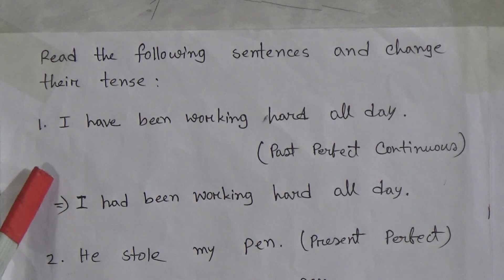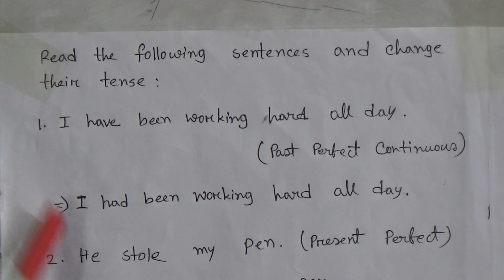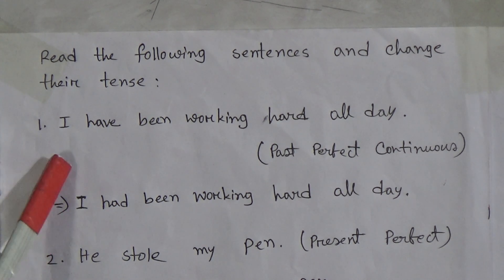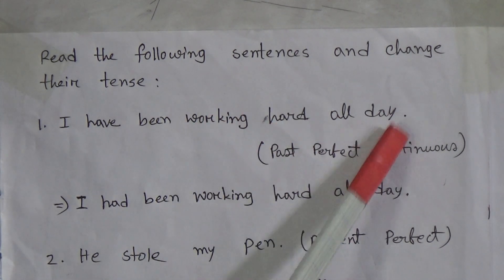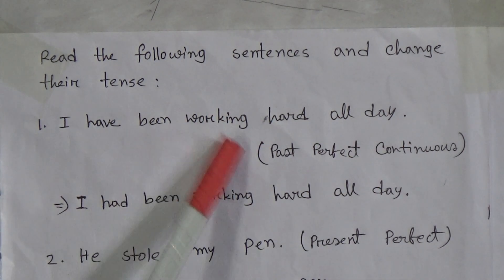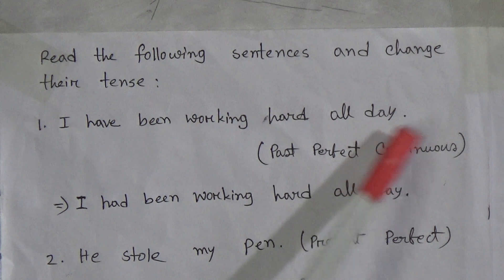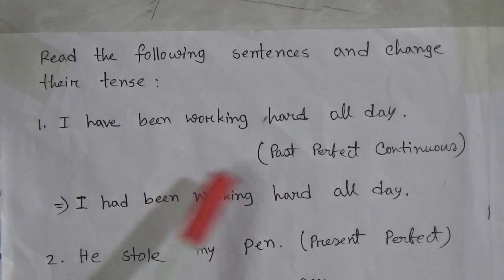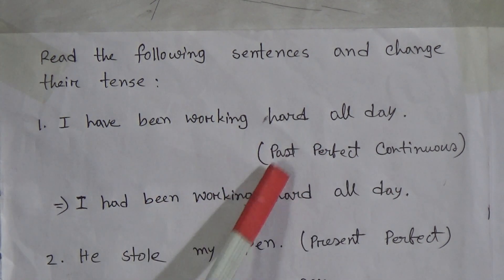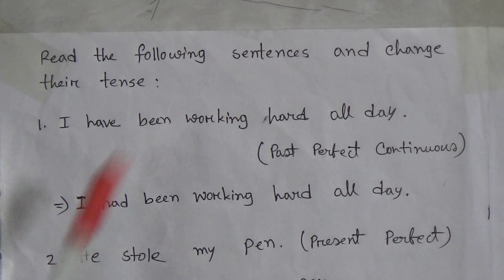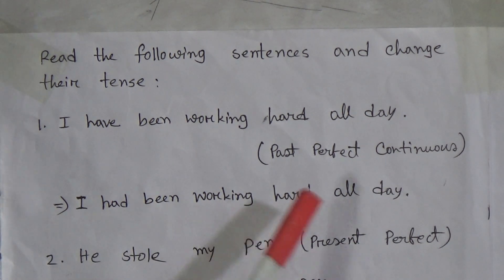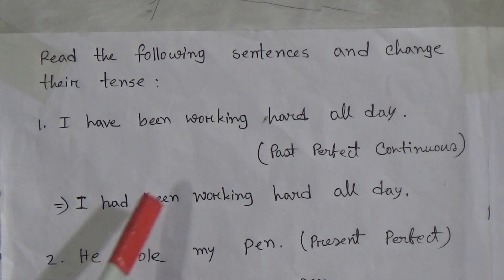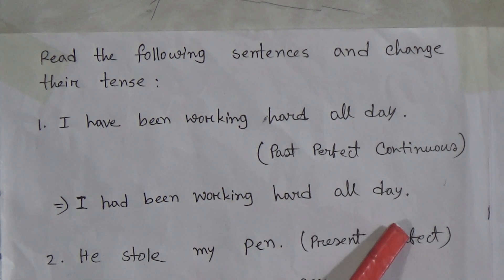Read the following sentences and change their tenses. Number one: 'I have been working hard all day.' You have to change this sentence into past perfect continuous tense. So here you write: 'I had been working hard all day.'